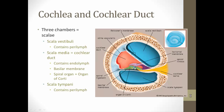Taking a slice of the cochlea, we can see it consists of three chambers or scala. First is the scala vestibuli at the top, filled with perilymph. Below it is the scala media, which is the cochlear duct, filled with endolymph and containing the basilar membrane at the bottom, the organ of Corti — or spiral organ — above that, and the tectorial membrane above that. Finally, below the scala media is the scala tympani, which also contains perilymph.